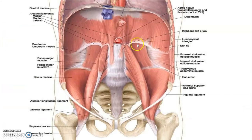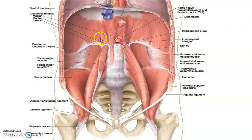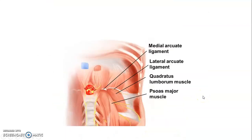Looking at the diagram, you can appreciate the median arcuate ligament, then the medial and lateral arcuate ligaments. The medial arcuate ligament is close to the psoas major, and the lateral one is in proximity to the quadratus lumborum muscle. This is confirmed in the next view showing the medial arcuate ligament, the lateral ligament, the quadratus lumborum, and the psoas muscle.